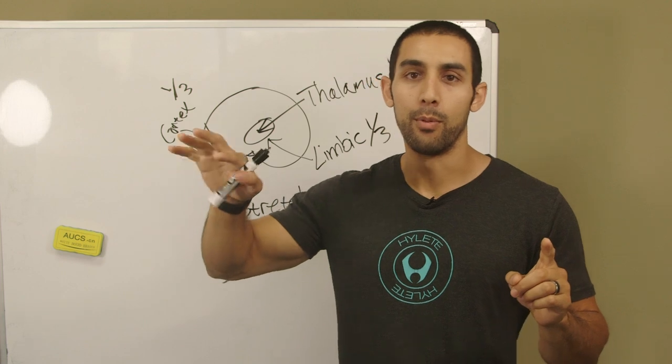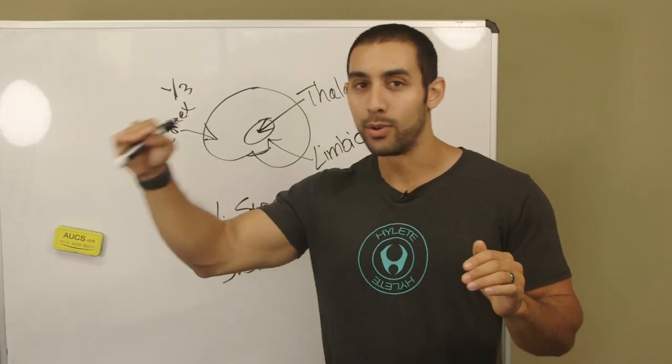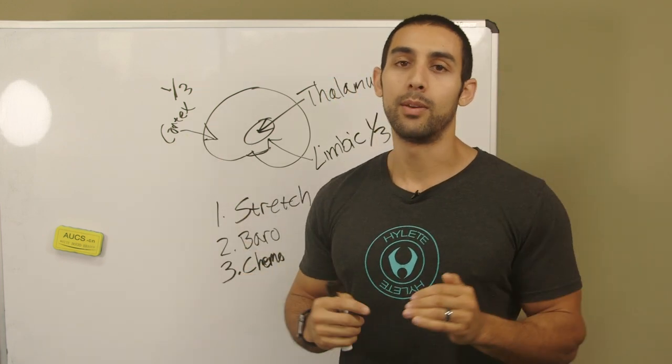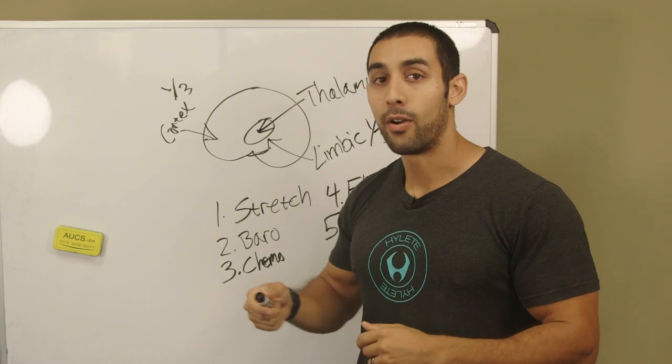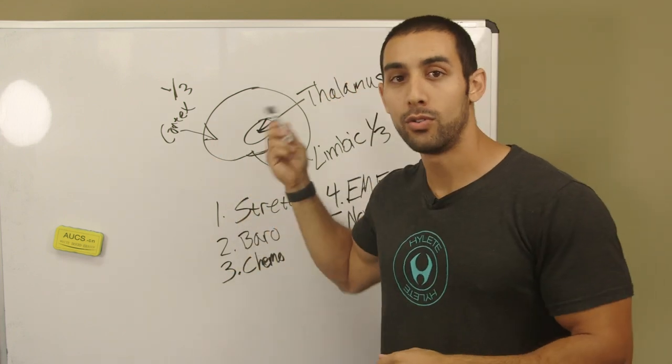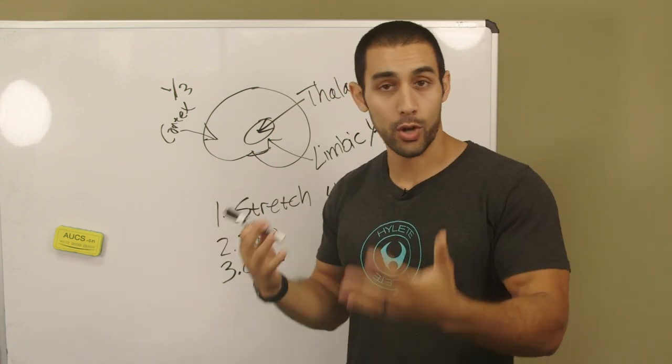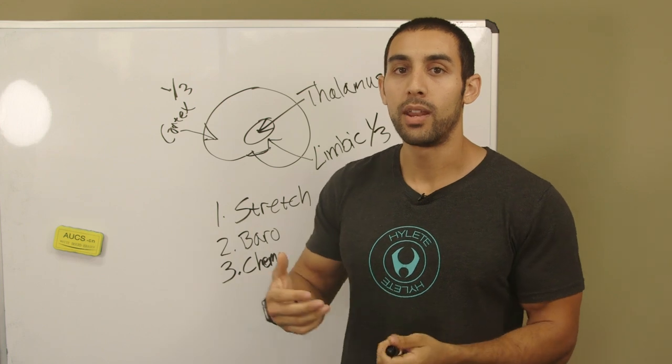Why does the brain want to create a clear map? Because again, your brain's number one job is safety and prediction before performance, before strength, before mobility, before fat loss. That always takes a back seat to safety and prediction.